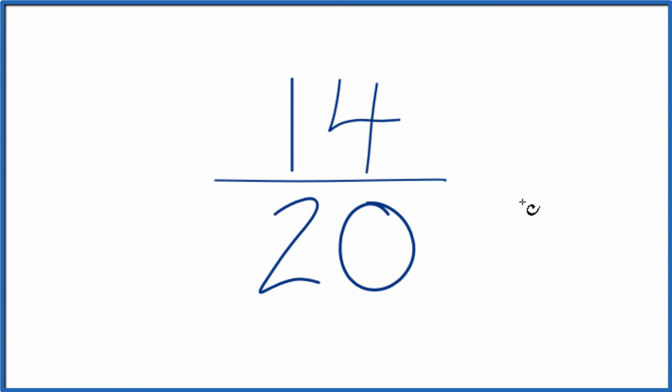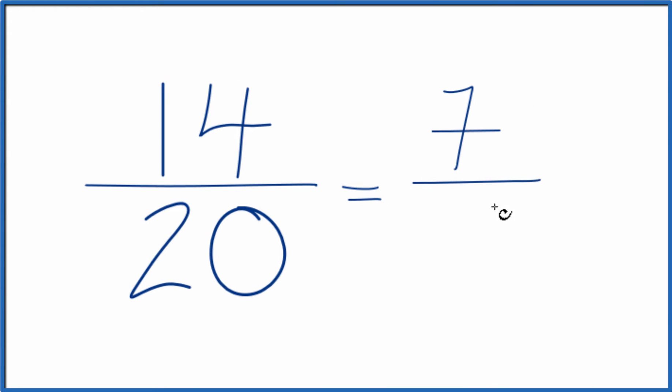It looks like the only common factor is 2. So if we divide 14 by 2, we get 7. If we divide 20 by 2, we get 10.